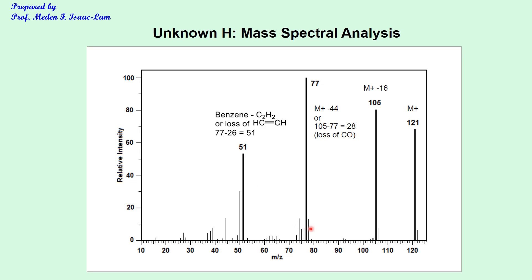The small peaks are just isotopes; we are concerned about the major peaks — in this case, 121, 105, 77, and 51. These can be analyzed as we construct the pieces of the molecule. The smaller peaks are isotopes coming from each of the atoms present in the molecule.